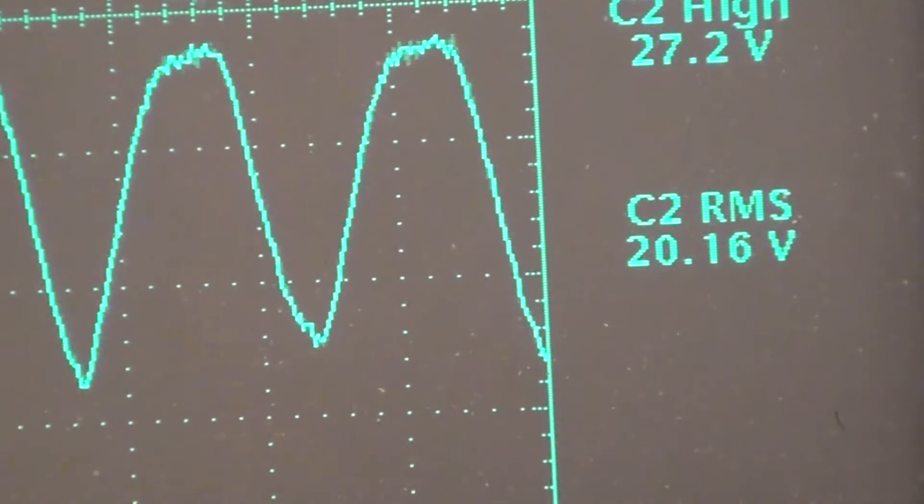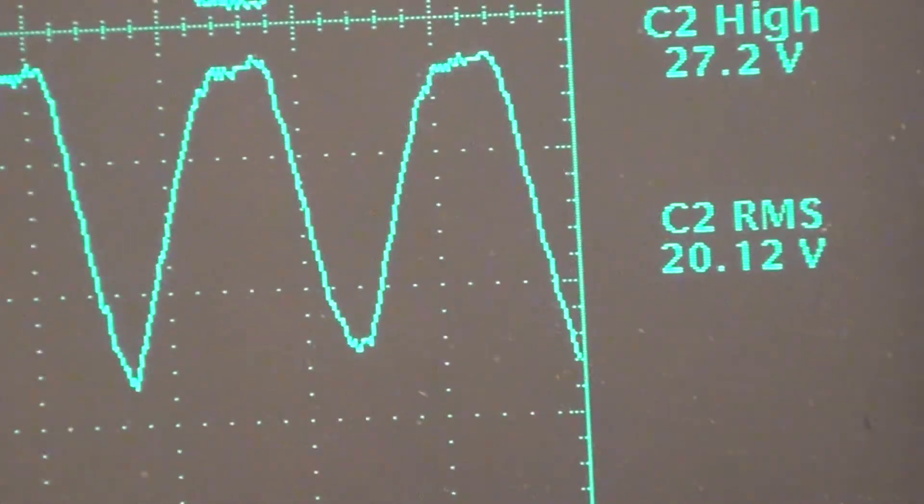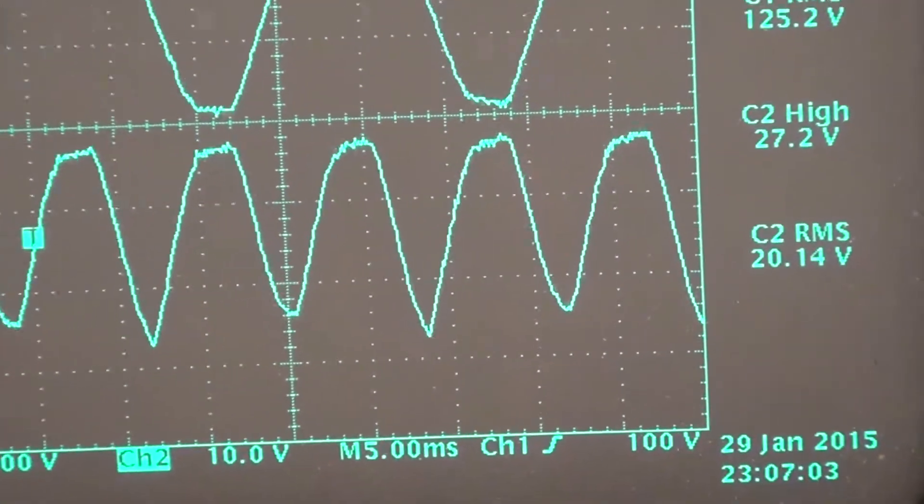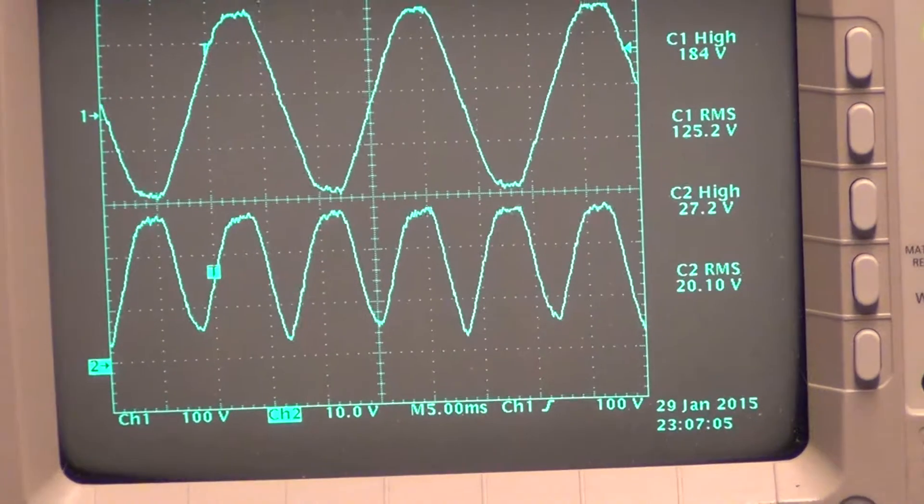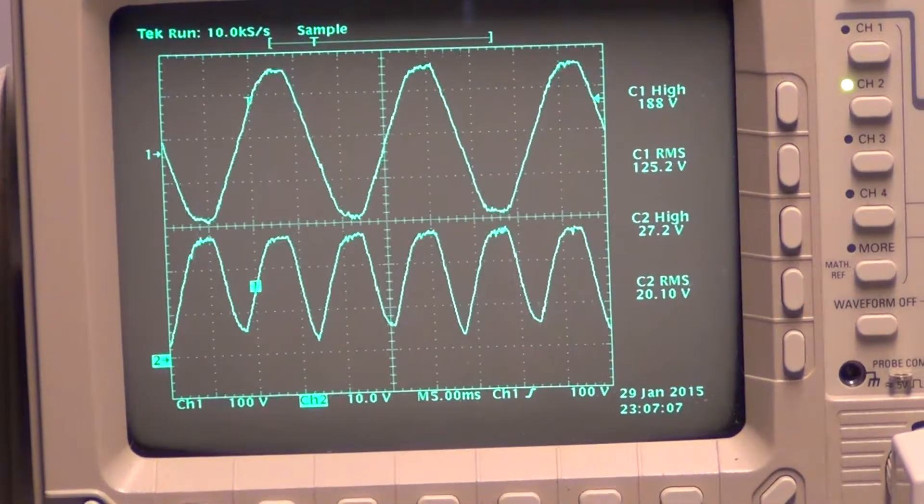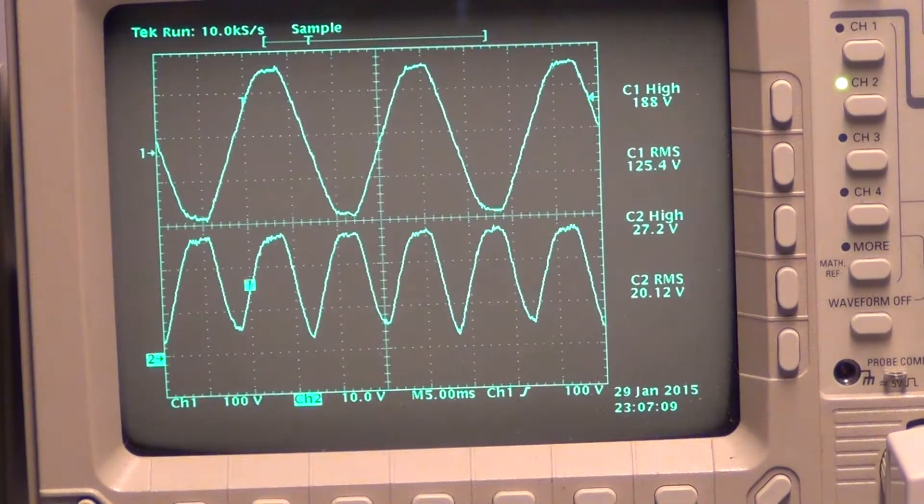And I'm doing an RMS measurement since it's a sine wave coming out of it. About 20. And again, they were looking for like 19.8. So it's pretty close to the target. So that's what the DC on this looks like.